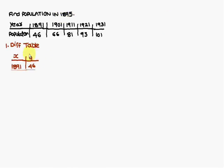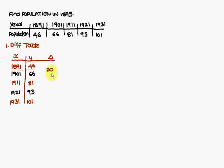First we have to construct a difference table for the given data. I have taken the X column as the year and the Y column as the population. So in 1891 it is 46 lakhs, 1901 is 66 lakhs, 1911 is 81 lakhs, 1921 is 93 lakhs, and 1931 is 101 lakhs. Next, we compute the first differences: 66 minus 46 is 20, written between those two values. Similarly, 81 minus 66, 93 minus 81, and 101 minus 93 are written in between their respective values.